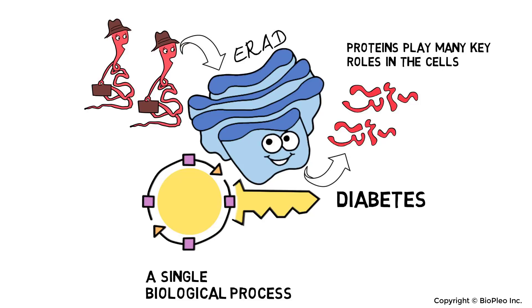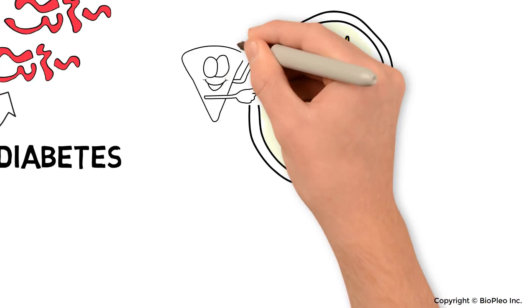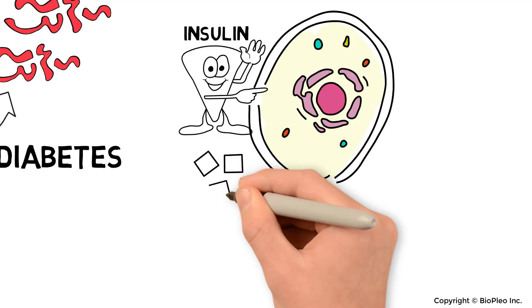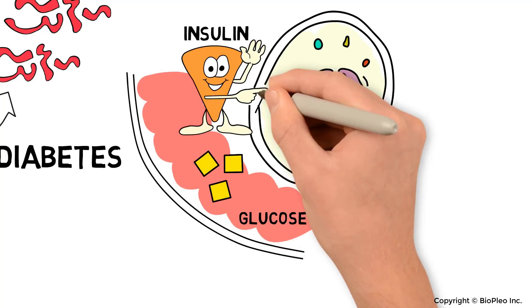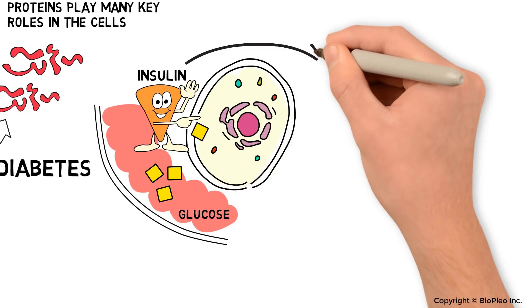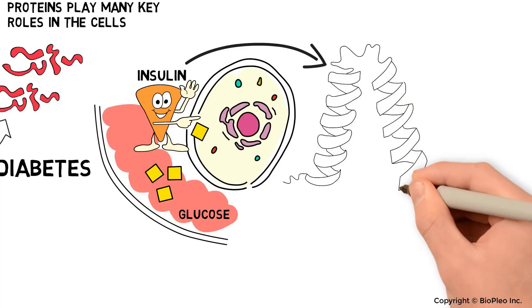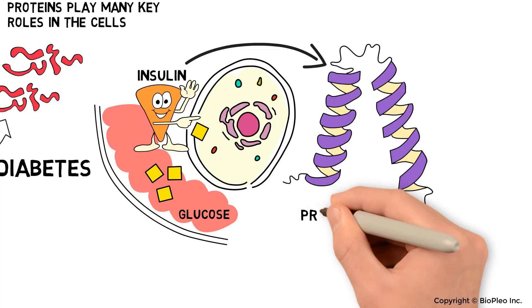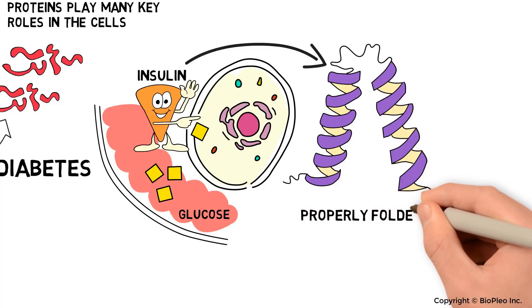Proteins play many key roles within cells. For example, insulin regulates blood sugar levels by allowing glucose to enter the cell from the bloodstream. Like other proteins, insulin can only do its job if it's in the correct shape, which scientists refer to as being properly folded.